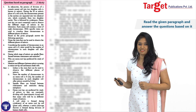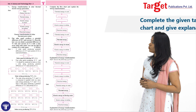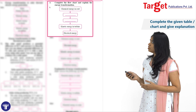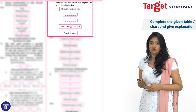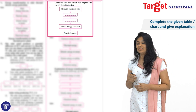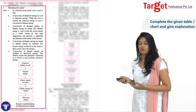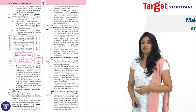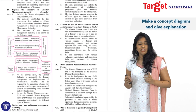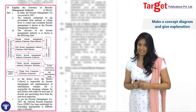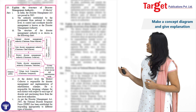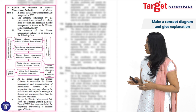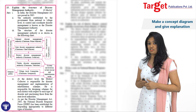The next type of question is complete the chart or table, where you are expected to complete the chart and because this question is for 5 marks, you would also need to explain it in detail. You will also come across a completely new type — draw a concept map and explain it in detail. As you can see, an example from disaster management is provided with a concept map and detailed explanation, fetching 5 marks.